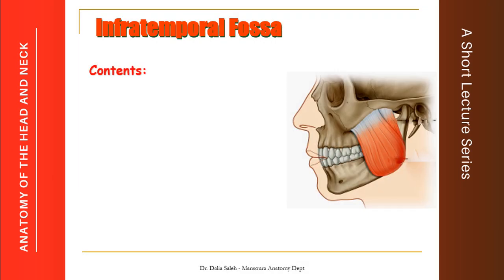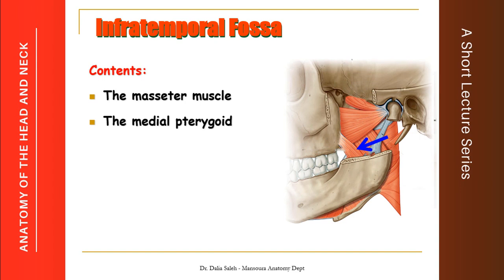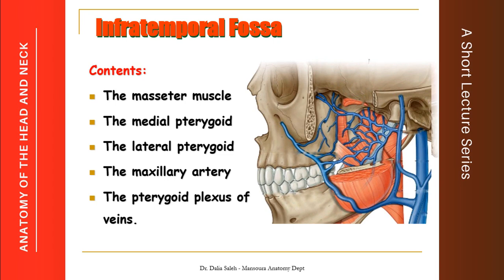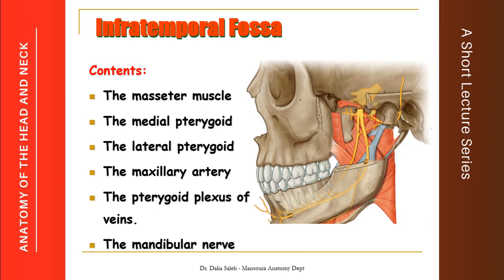The contents of the infratemporal fossa are as follows. We have the masseter muscle, which covers the lateral surface of the ramus of the mandible. On the medial surface of the ramus of the mandible, we have the medial pterygoid, which is made of two heads — superficial and deep. The lateral pterygoid muscle, which is a key player in the infratemporal fossa, is also made of two heads — upper and lower. The main arterial supply in this region is from the maxillary artery, one of the two terminal branches of the external carotid artery. The venous drainage is from the pterygoid plexus of veins, which drains into a very short maxillary vein. The nerve supply is from the mandibular nerve, the third division of the trigeminal nerve or the fifth cranial nerve.